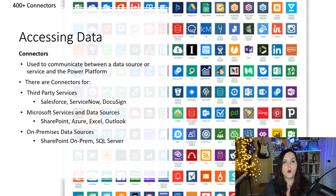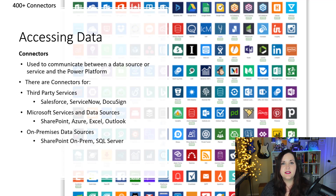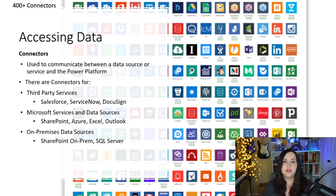We also have data connectors for what we call on-premises data. On-premises means that the data is stored on a physical server somewhere. Some typical on-prem data we would connect to would be SharePoint 2016, 2019 on-prem, and SQL Server. The ability to connect to these on-prem services is done via something called the on-premises data gateway, which you can install on your computer to allow that connection between the Power Platform and the on-prem data.